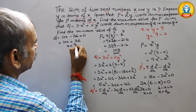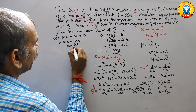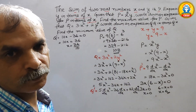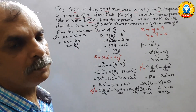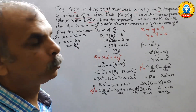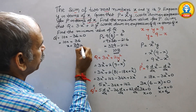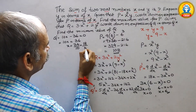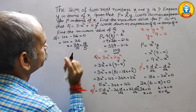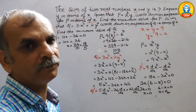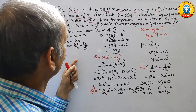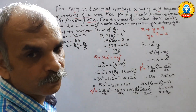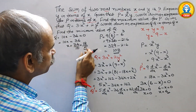So 10x equals 36, therefore x equals 36 by 10. Reducing by 2, x equals 18 by 5. This x value we now substitute back into q.